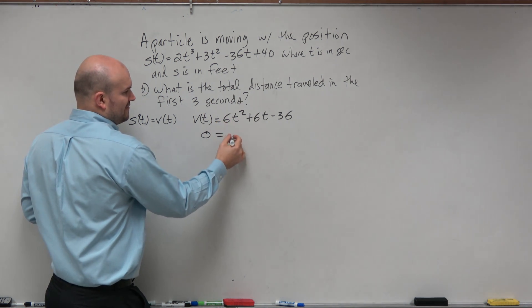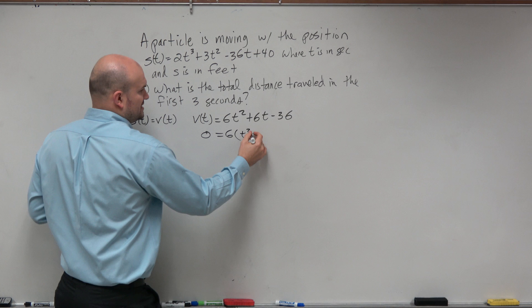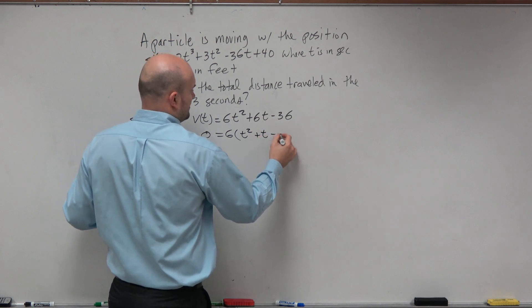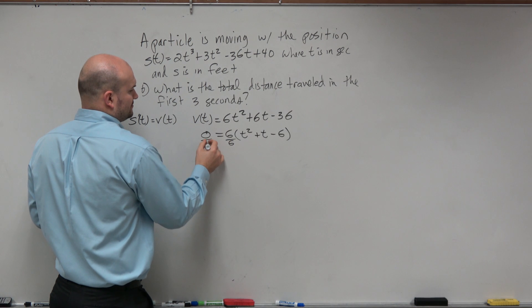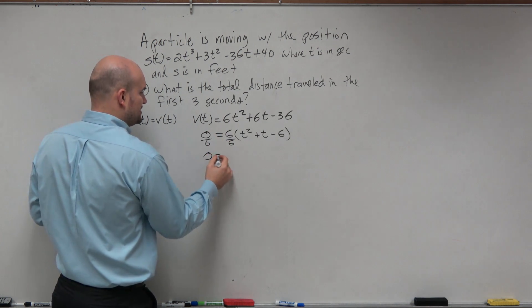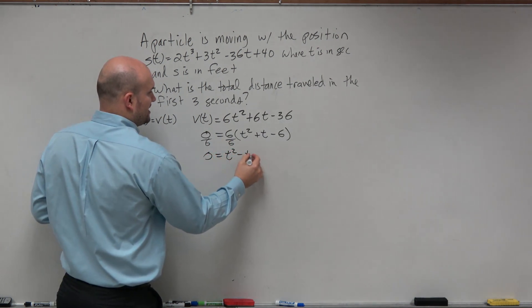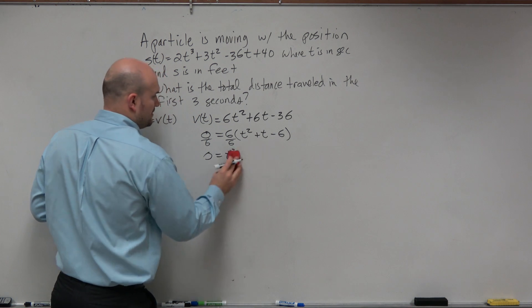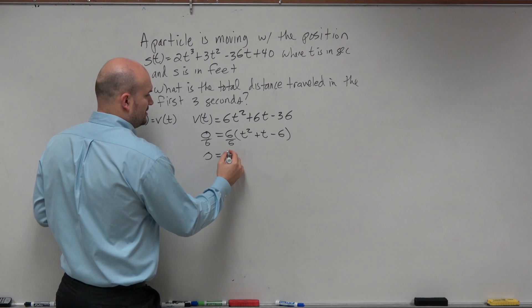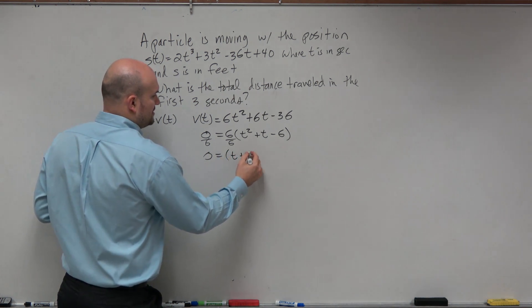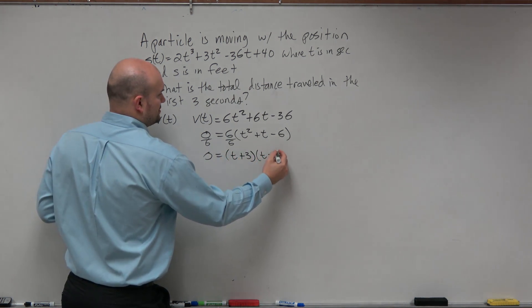So therefore, here I can factor out a 6. And I'm left with t squared plus t minus 6. That can divide out. So therefore, I'm left with zero equals t squared plus t minus 6. Let's factor that out. What two numbers multiply to give me negative 6 and add to give me positive 1? So that would be t plus 3 and t minus 2.